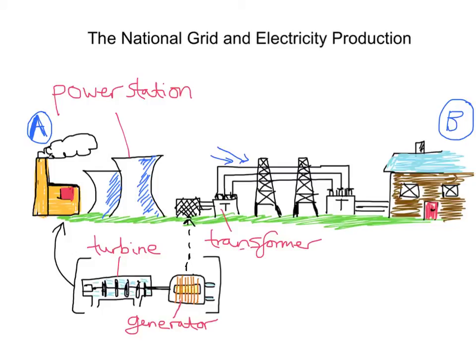This transformer at the beginning, because we need a higher voltage, is most likely going to be a step-up transformer. Step-up transformers are used at power stations to produce the very high voltages needed to transmit electricity through the national grid power lines. These high voltages, as you might guess, are far too dangerous to use in the home.